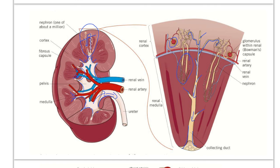That's everything you need to know about the gross structure of the kidney - the labels of overall parts: the capsule, the cortex, the medulla, the pelvis, plus the fact that we've got all these nephrons and then the ultrastructure of the nephron itself. Well done for listening to all that - you will be tested on the names of all the different parts.